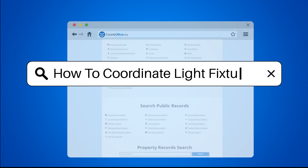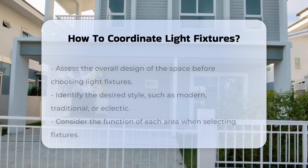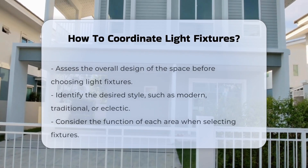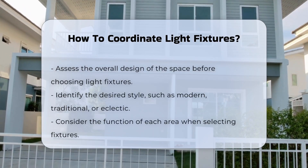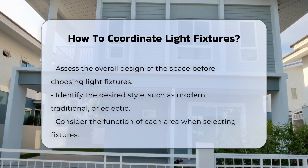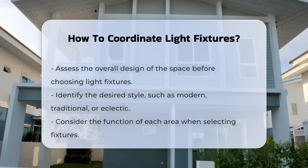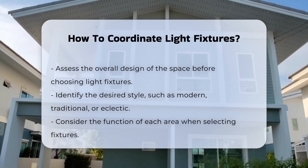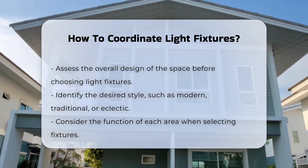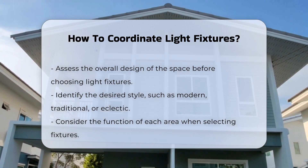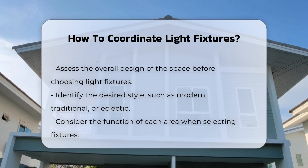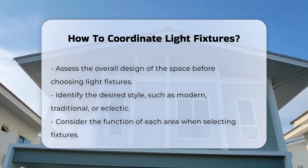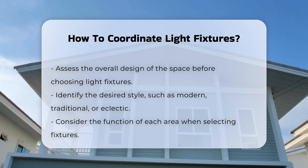How to coordinate light fixtures. Coordinating light fixtures involves several key considerations. First, assess the overall design of the space. Identify the style you want to achieve, whether modern, traditional, or eclectic.